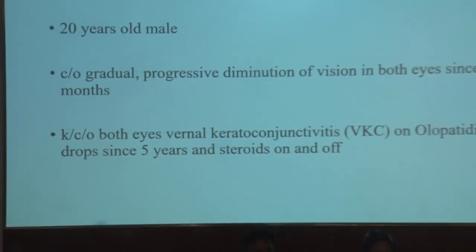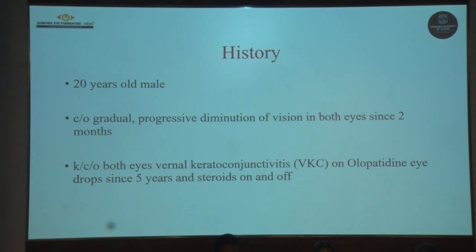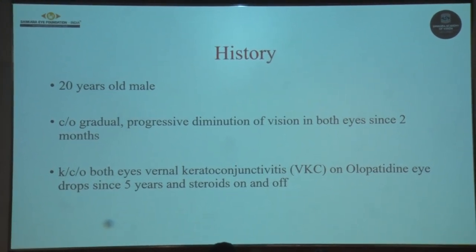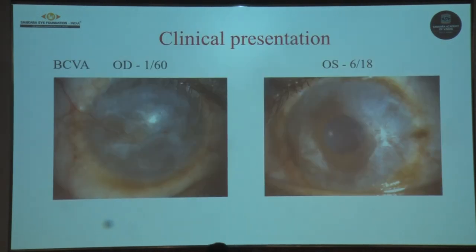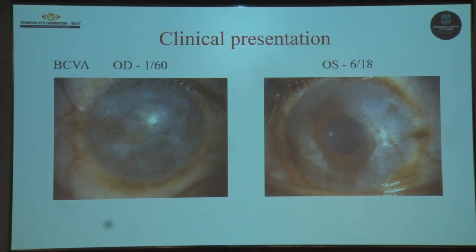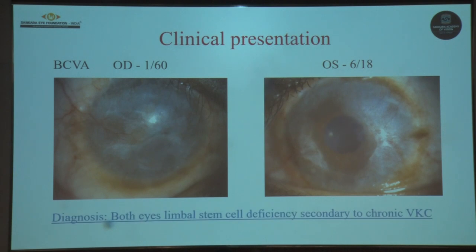The case involved limbal stem cell deficiency due to chronic vernal keratoconjunctivitis. A 20-year-old male presented with gradual progressive diminution of vision in both eyes since two months, more in the right eye. He was a known case of vernal keratoconjunctivitis, using olopatadine eye drops and steroids on and off for five years. BCVA was 1/60 in the right eye and 6/18 in the left eye. Slit lamp showed total absence of limbal palisades in both eyes, 360-degree superficial corneal vascularization, thick pannus with diffuse stromal scarring in the right eye, and peripheral stromal scarring sparing the central cornea in the left eye. He was diagnosed with bilateral limbal stem cell deficiency secondary to chronic vernal keratoconjunctivitis.